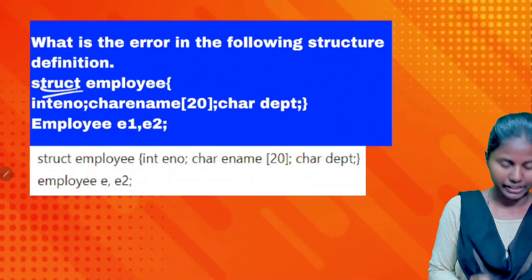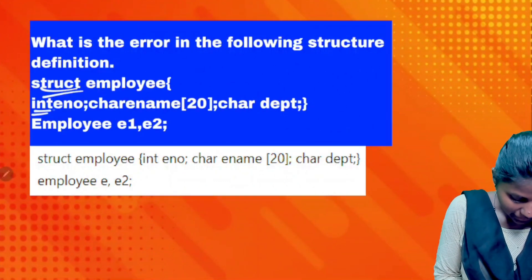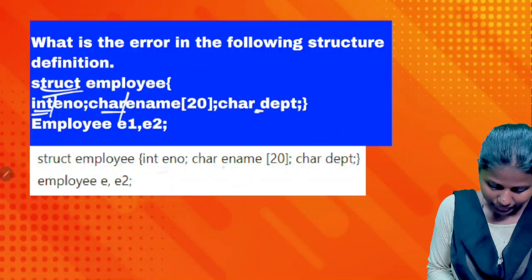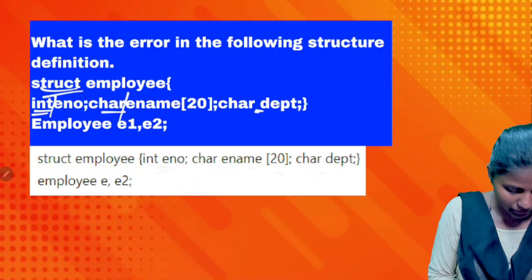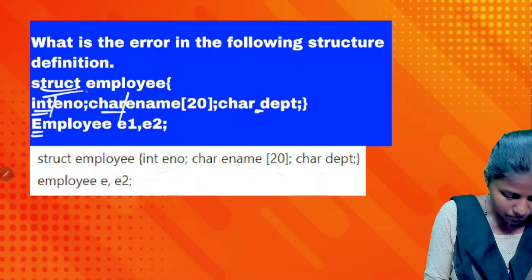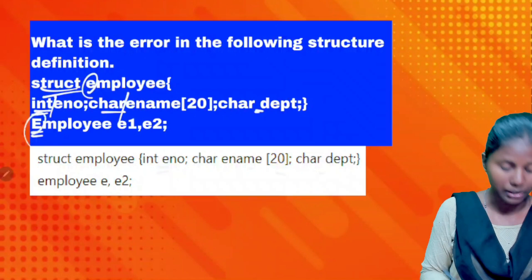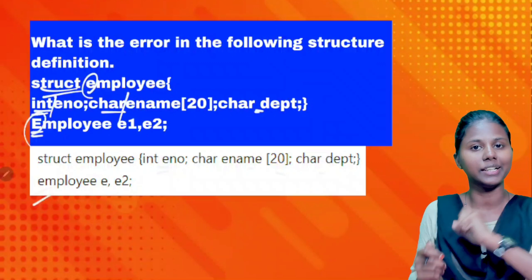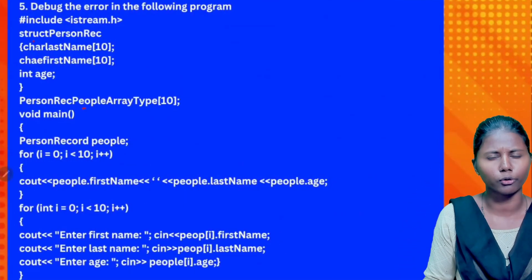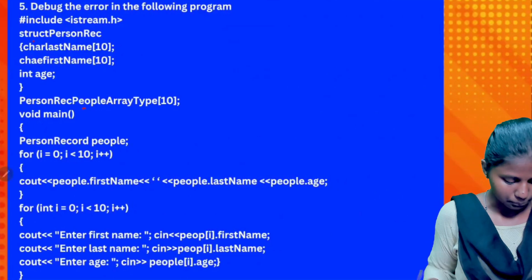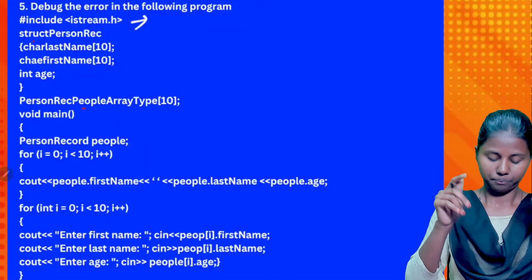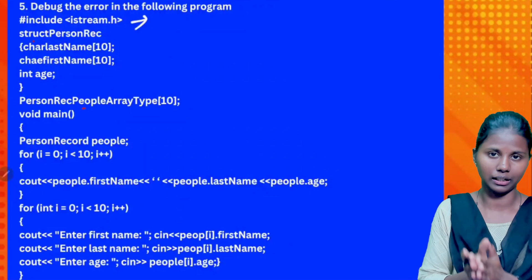Struct — a data type gap, employee gap, data type gap, character data type gap. Check: C hash is correct, include spell is correct. Greater than, less than, brackets — use. OK, next.